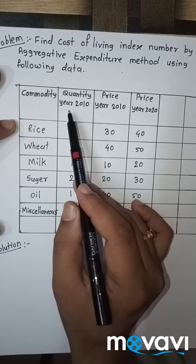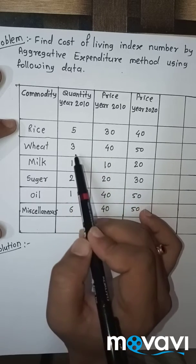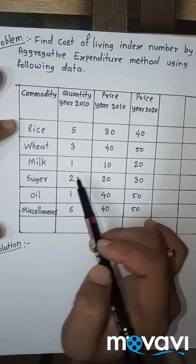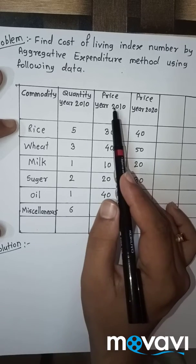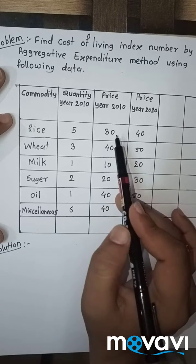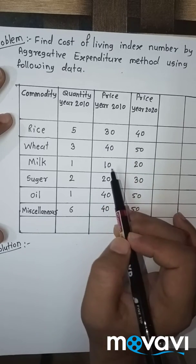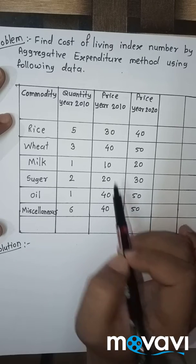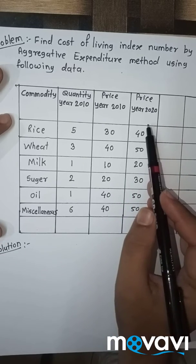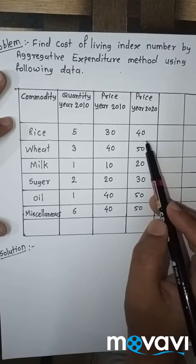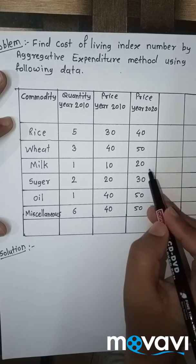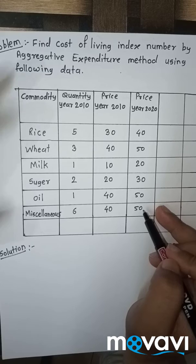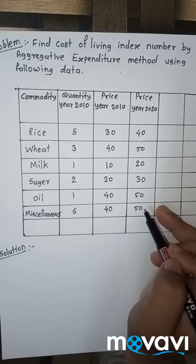Quantity of year 2010: 5, 3, 1, 2, 1, 6. These quantities are given. Then price of year 2010: 30, 40, 10, 20, 40, 40. These are price of year 2010. And price of year 2020: 40, 50, 20, 30, 50, and 50. These prices are given.